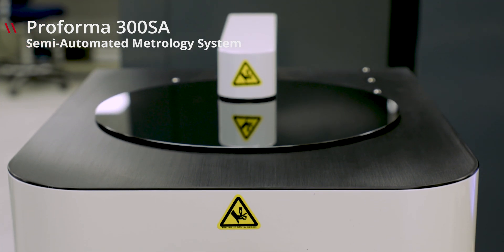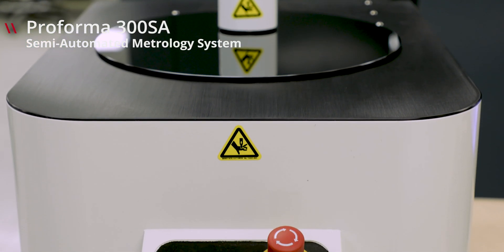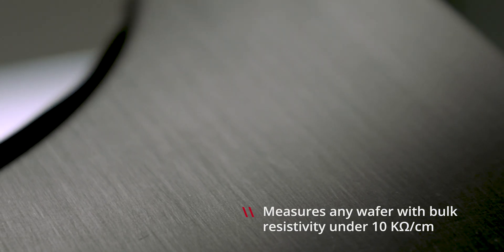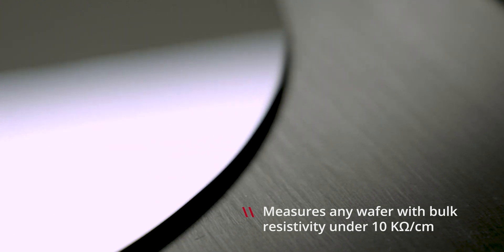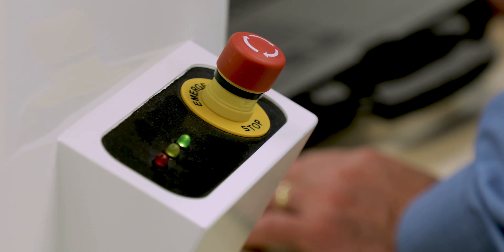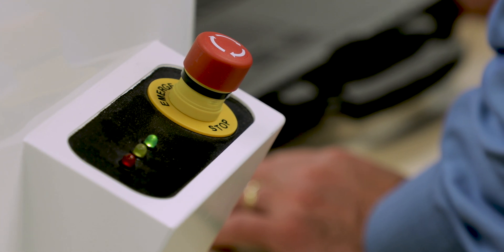The MTI Proforma 300 SA is a semi-automated wafer inspection system capable of handling semi-conducting and semi-insulating materials, including gallium arsenide, indium phosphide, germanium, silicon carbide, and sapphire, as well as silicon.